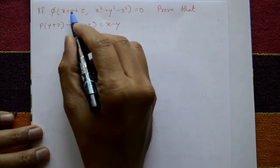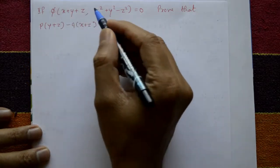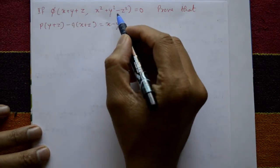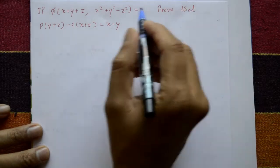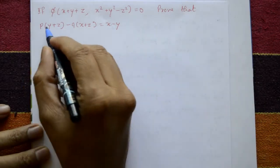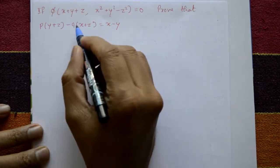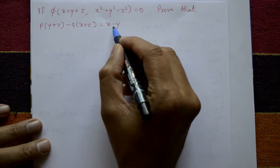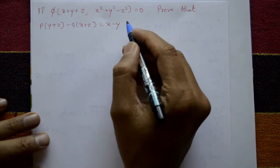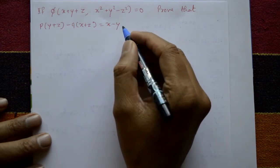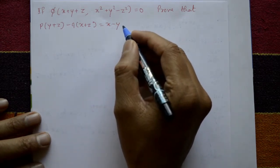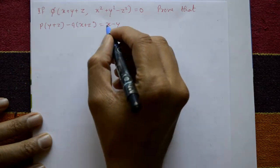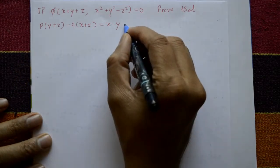If φ(x+y+z, x²+y²-z²) = 0, prove that p(y+z) - q(x+z) = x-y. This is a partial differential equation and we will prove this using the chain rule.